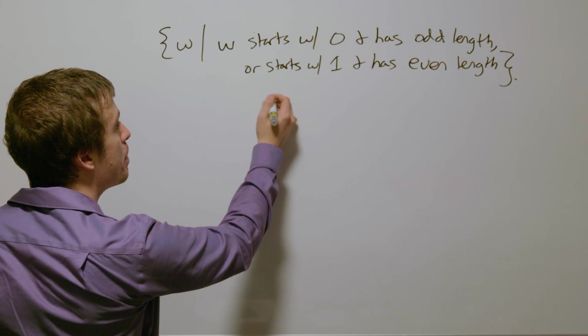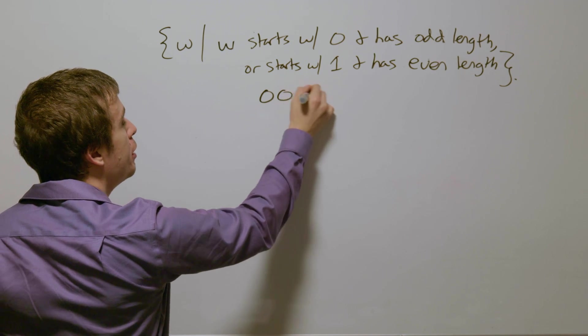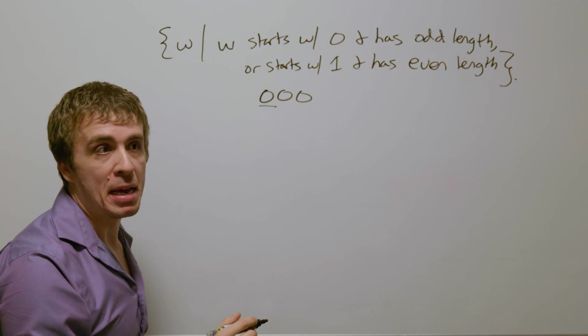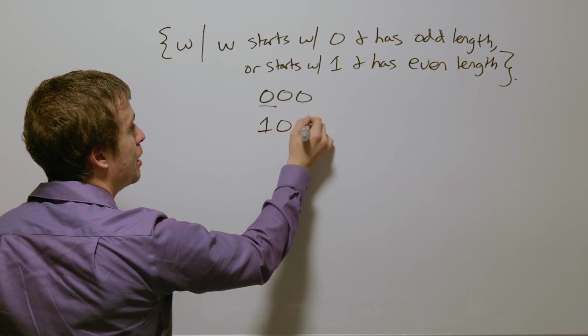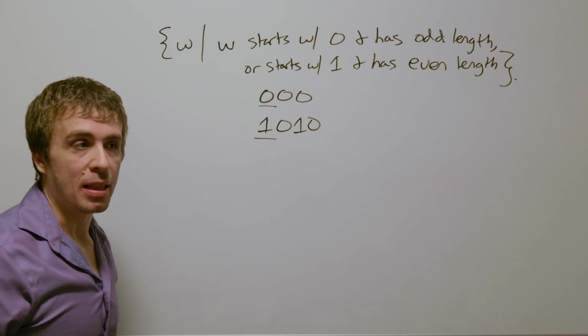So as an example, if w was 0, 0, 0, it starts with a 0 and has odd length, and if it instead was a 1, 0, 1, 0, it starts with a 1 and has even length.